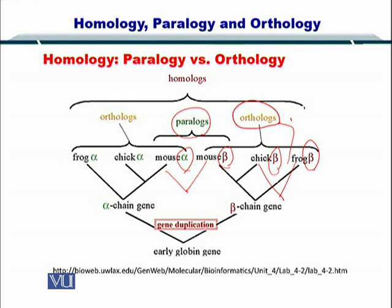Homology is essentially a combination of orthologous genes and paralogous genes — or orthologous proteins and paralogous proteins. So when we study homology modeling, we try to find proteins in other species as well as proteins within the same species that have the same or similar sequence, towards predicting the structure of an unknown protein.